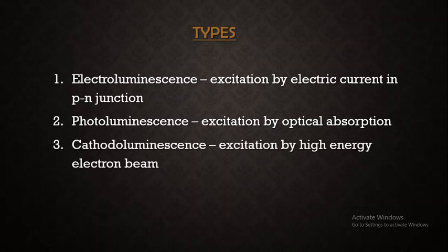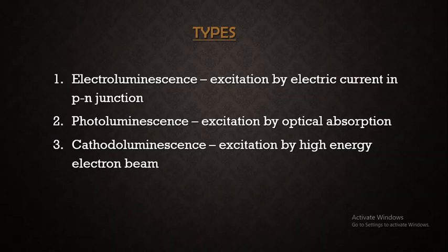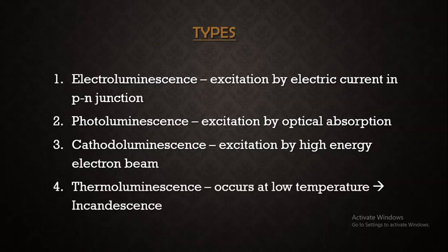The third type of luminescence is cathodoluminescence, where the excitation of electrons is by using a high energy electron beam. So all these types are based on the type of input given to excite the electrons: when it is electric current we have electroluminescence, when it is a photon we have photoluminescence, and when we use a high energy electron beam it is cathodoluminescence.